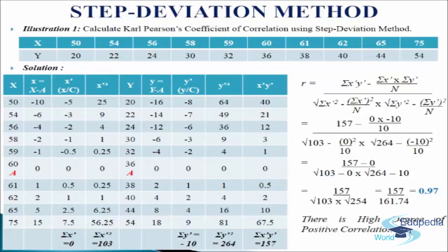The same thing applies for y variables. We will put up the values of the variables; we have taken 36 as the assumed mean. In the next column we will write y equals to y minus a — we will deduct 36 from y variables and get the following results. Then come to the next column, y dash equals to y divided by c, where c is the common factor of 2. We will do the same calculation as for the x variable and get the following results. We will add up the values and get sigma y dash equals to minus 10. In the next column we will write y dash square, squaring up the values from the y dash column. We will get sigma y dash square equals to 264.